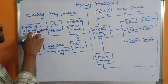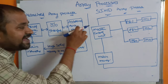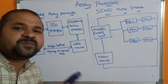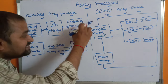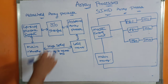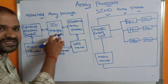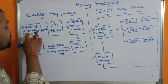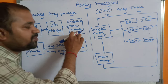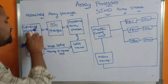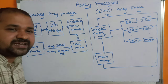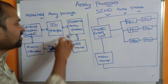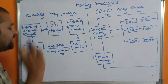Let's see this diagram. This is the general purpose computer, and we have attached the array processor, which acts as a peripheral device. Just like a peripheral device, we attach this array processor to the computer. We have an IWO interface, which is mainly useful in order to resolve the differences between the computer and this processor. This computer may be slow, whereas this processor is extremely faster, so in order to resolve those differences, we use this IWO interface.